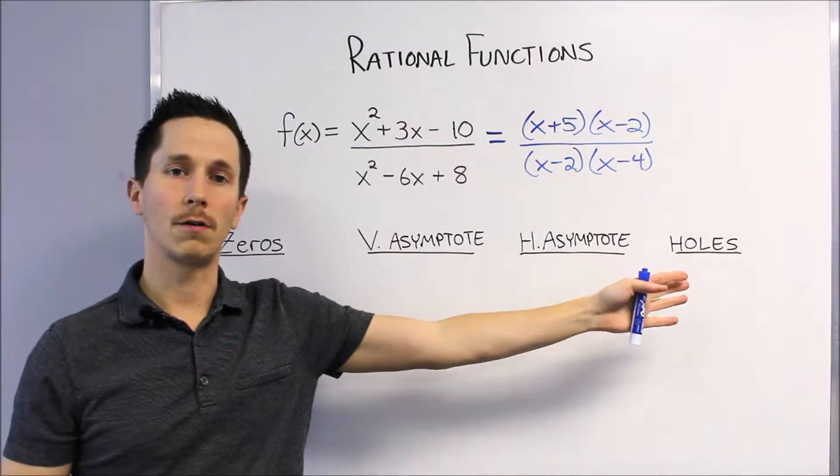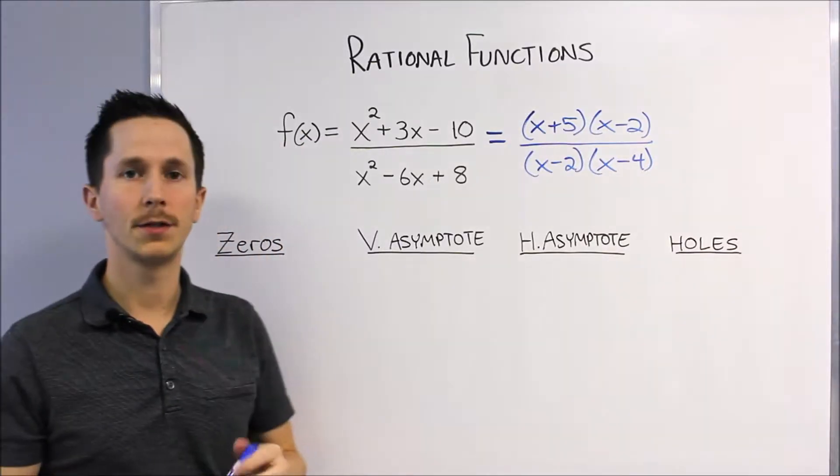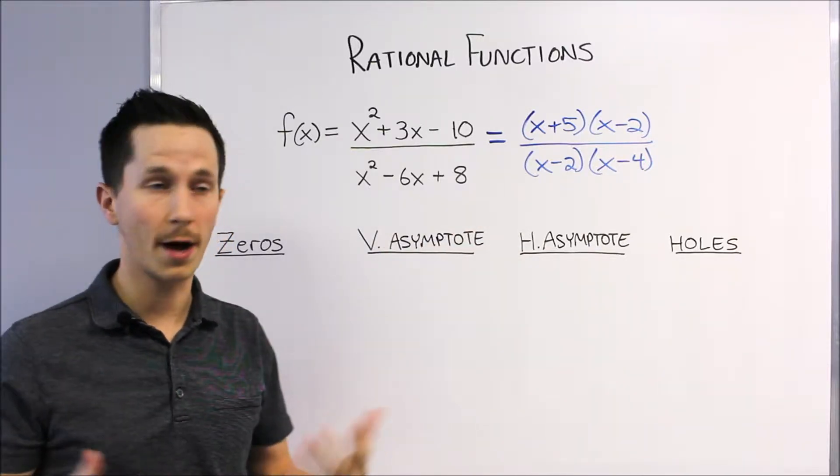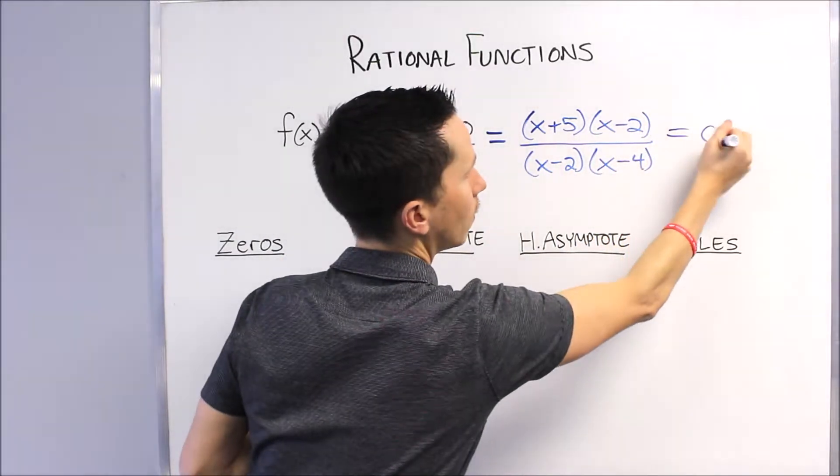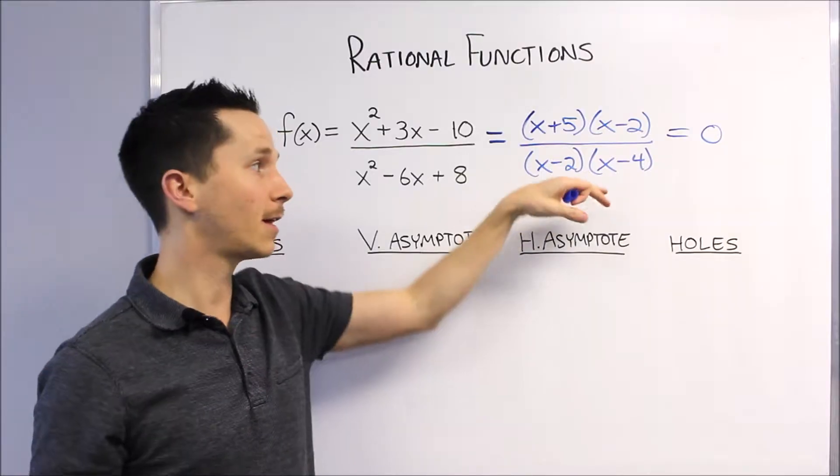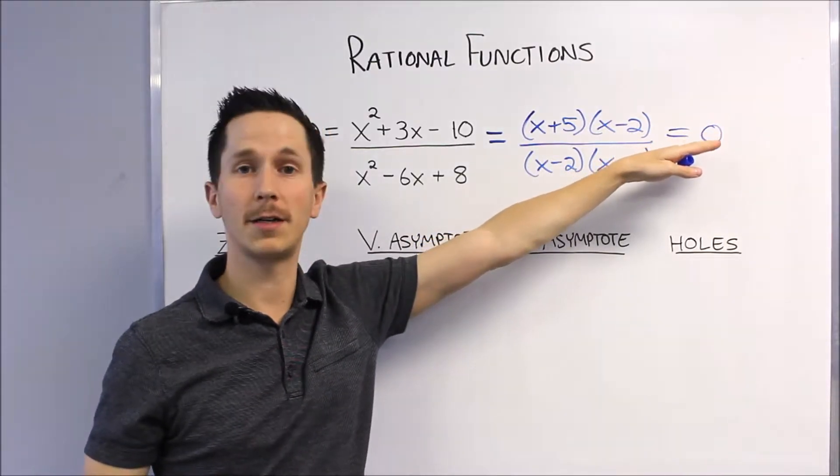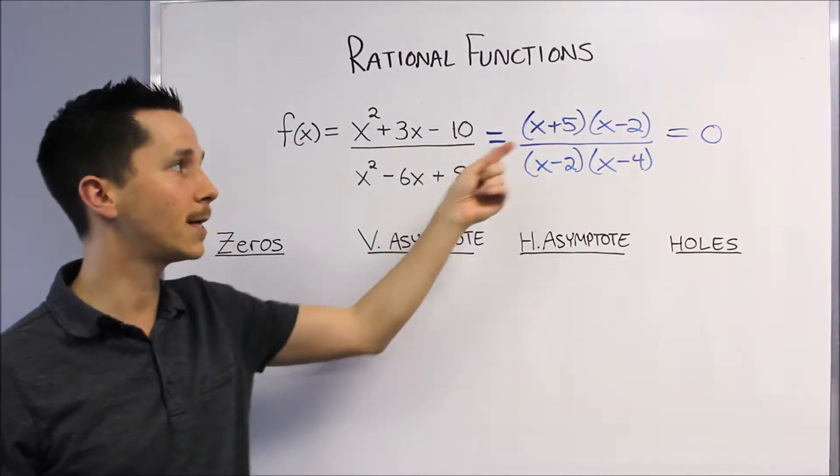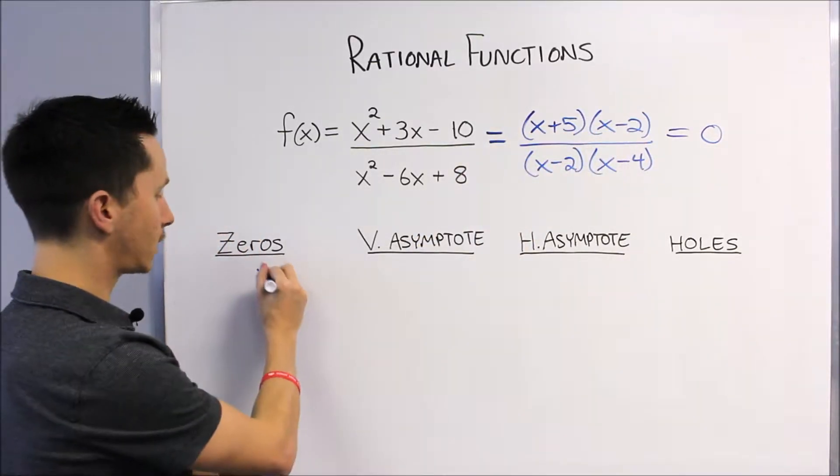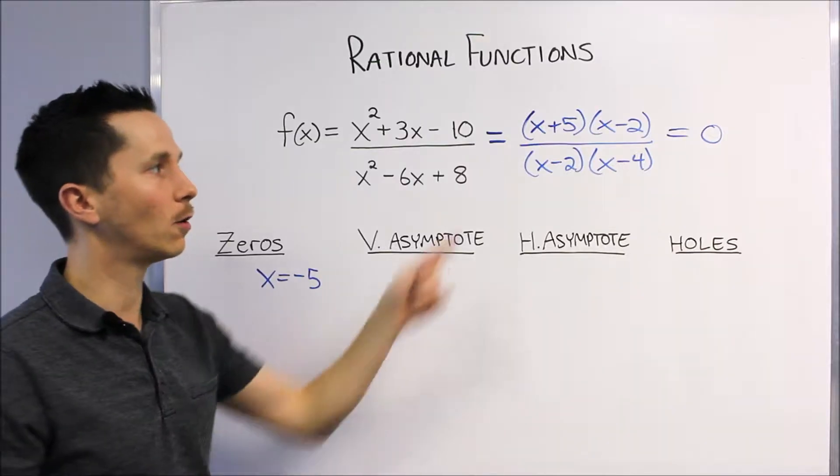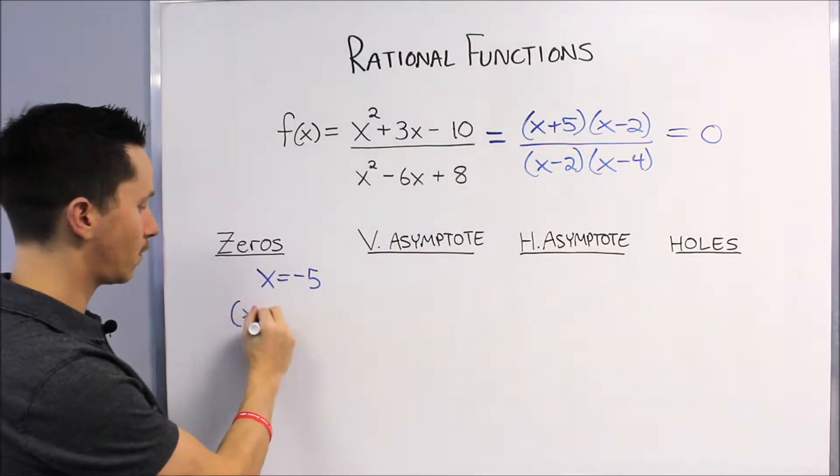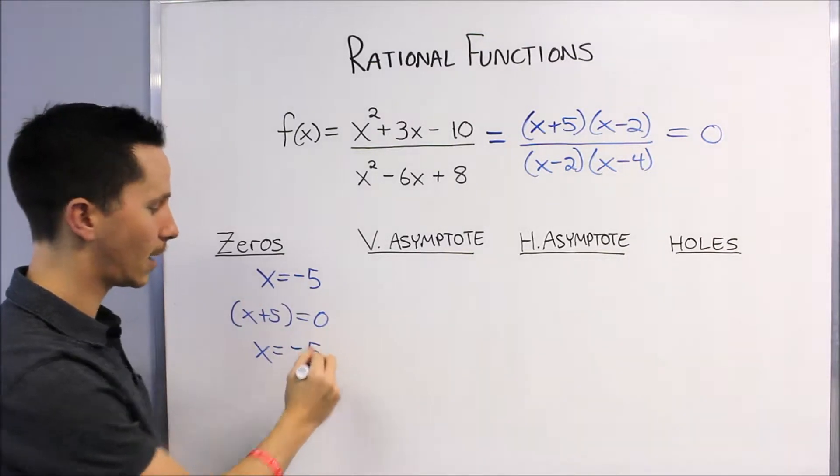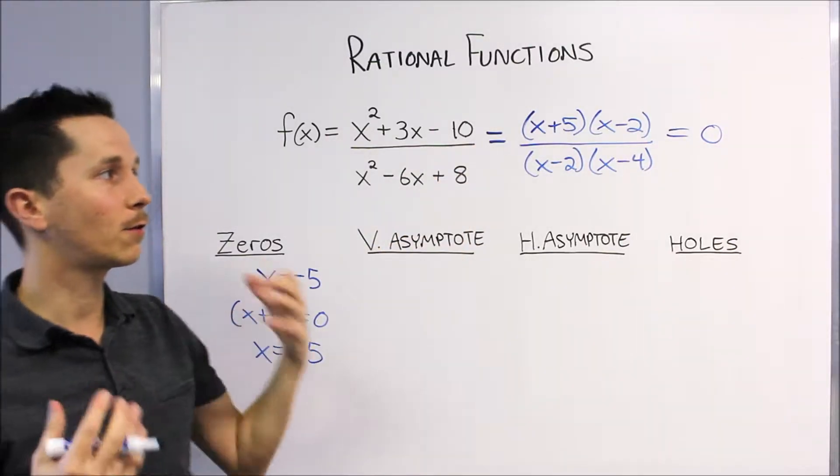Now that we have it in factored form both top and bottom, we can easily solve for all of these things. First thing is the zeros. Think about what a zero is—it's an x-intercept, that means it's an x value that makes the entire function 0. So if I set this equal to 0, I can basically ignore the denominator. Really all we focus on for the x-intercepts is what makes the top 0, so in this case it's x equals negative 5. If we don't see that, take one of the factors, x + 5, set it equal to 0 and solve: x equals negative 5.